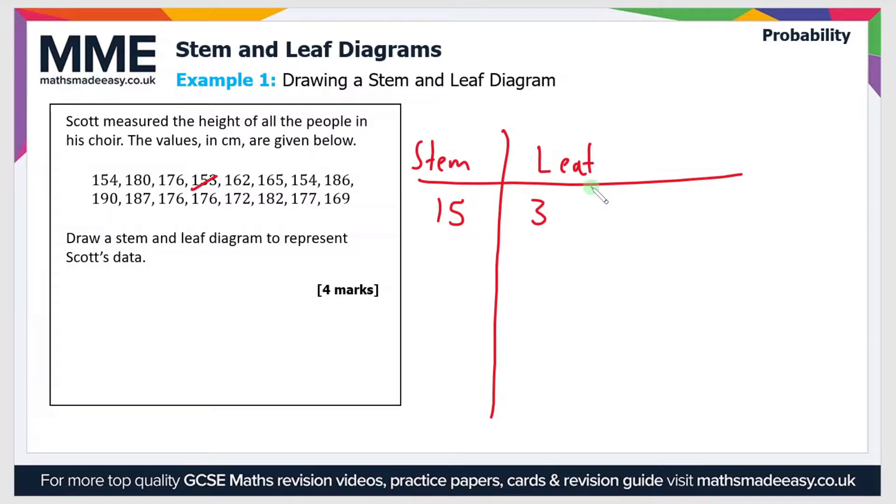So what this means is the stem is 150 and the leaf is 3, that means the value is 153. So now we can formulate a key. The key is essential to all stem and leaf diagrams. So our key will be 15 and then a line and 3 and then we say what that is equal to.